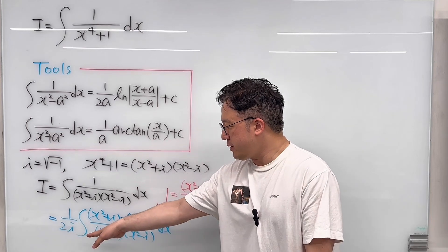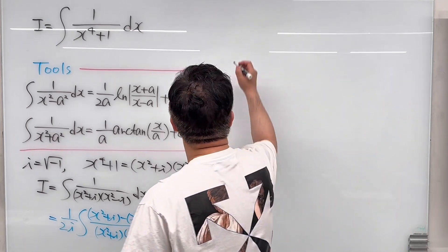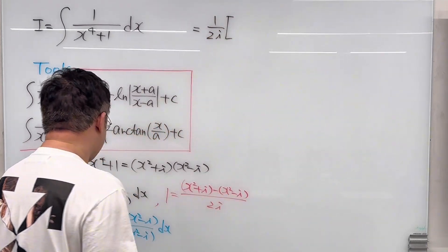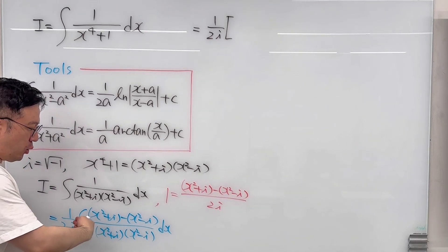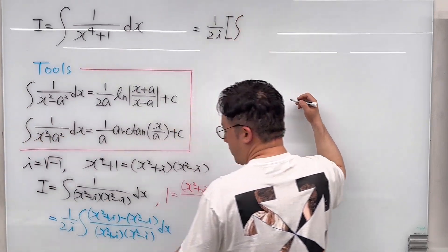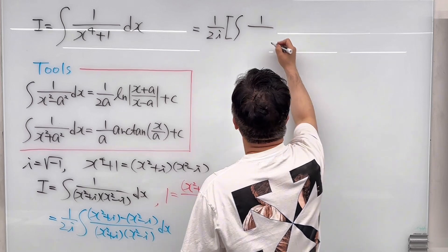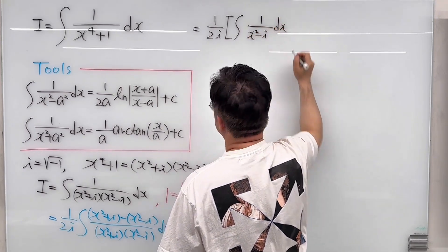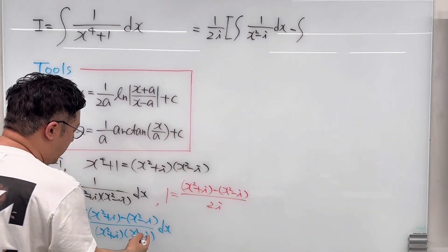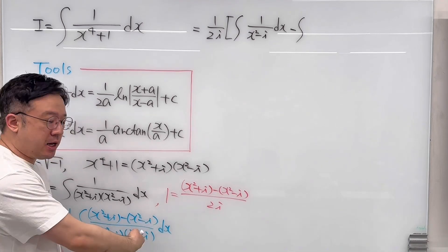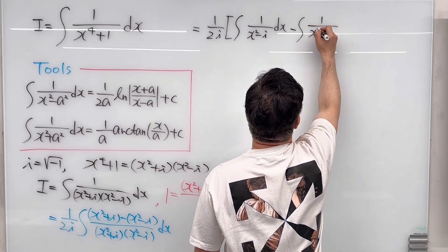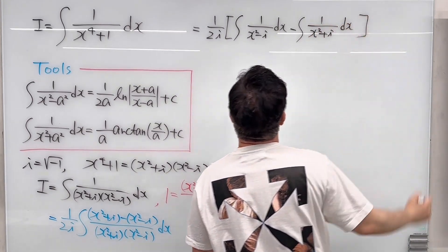We can separate this into two integrals. Still with the factor 1/(2i) out front: the first integral has (x² + i) in the numerator, which cancels with the denominator, leaving the integral of 1 over (x² − i) dx. Then minus the second integral, where (x² − i) cancels, leaving the integral of 1 over (x² + i) dx.